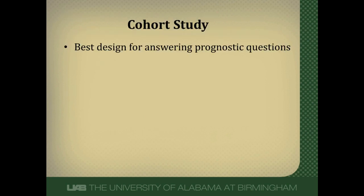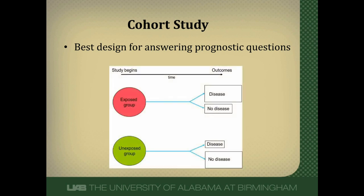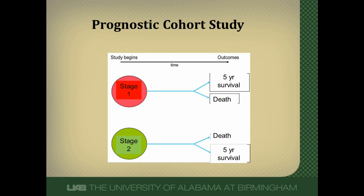A cohort study is the best design for answering prognostic questions. Cohort studies are observational studies — we just observe patients. There is an exposed group or cohort and an unexposed group or cohort, and we follow them forward in time for the development of disease or not. To look at this prognostically, instead of following people with a risk factor, we follow patients with a prognostic factor. For example, my prognostic factors might be stages of cancer — a group with stage 1 cancer, a group with stage 2 cancer — followed for 5 years to see how many are dead or alive, studying the relationship between cancer stage and 5-year survival.